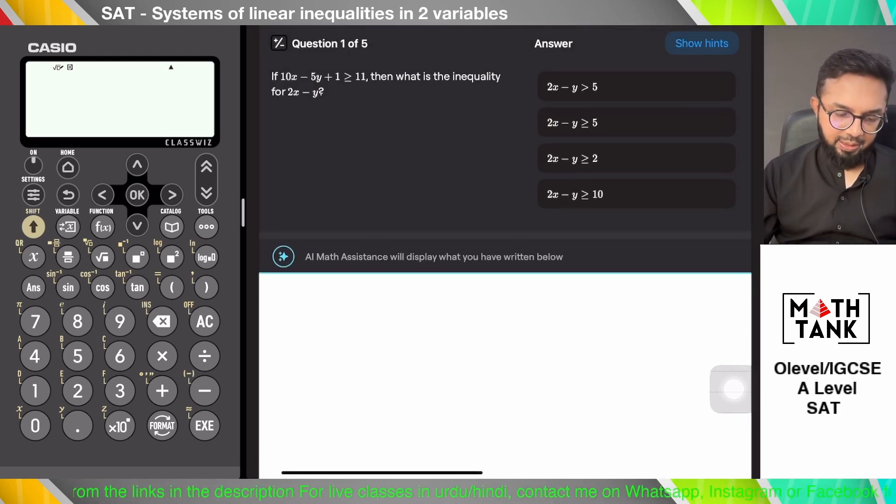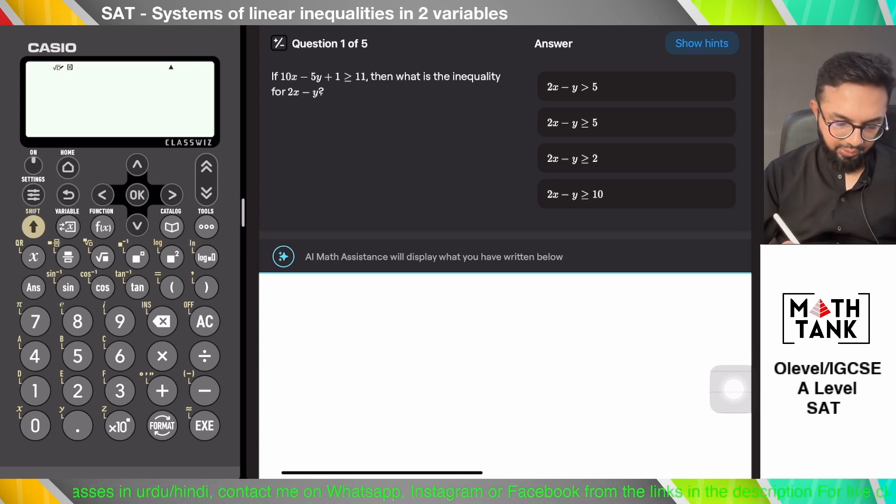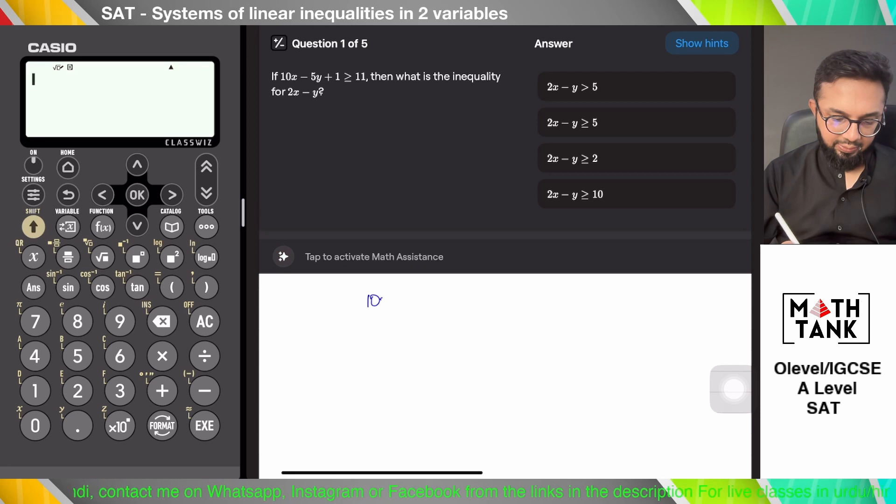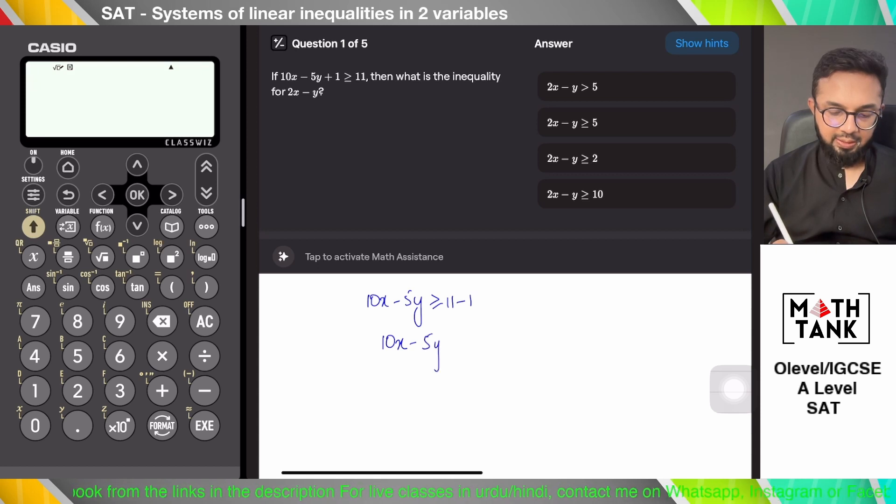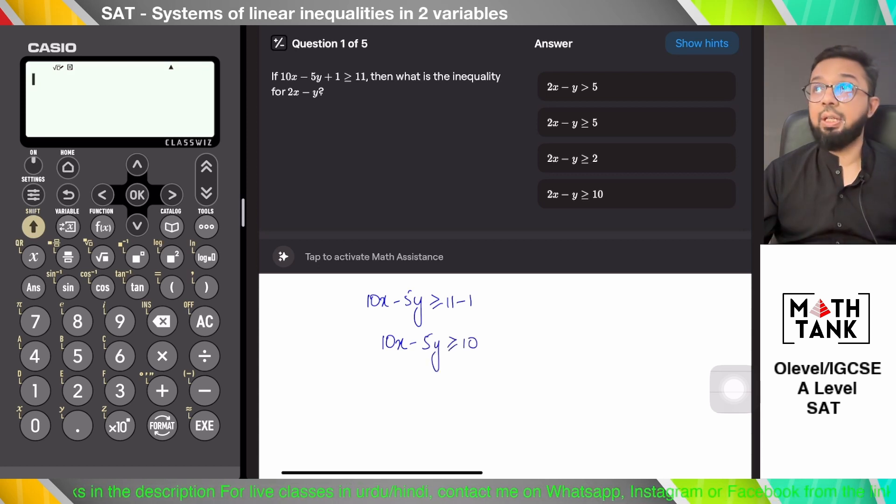If 10x minus 5y plus 1 is greater than or equals to 11, then what is the inequality 2x minus y? So 10x minus 5y is greater than or equals to 11 minus 1. 10x minus 5y is greater than or equals to 10.